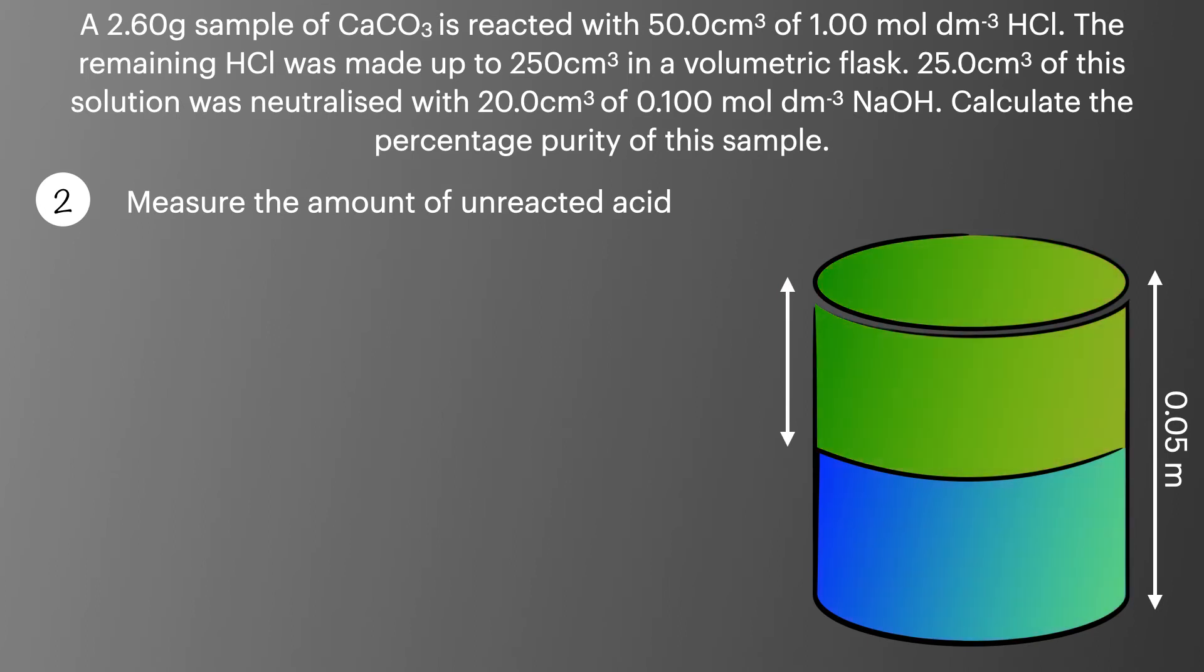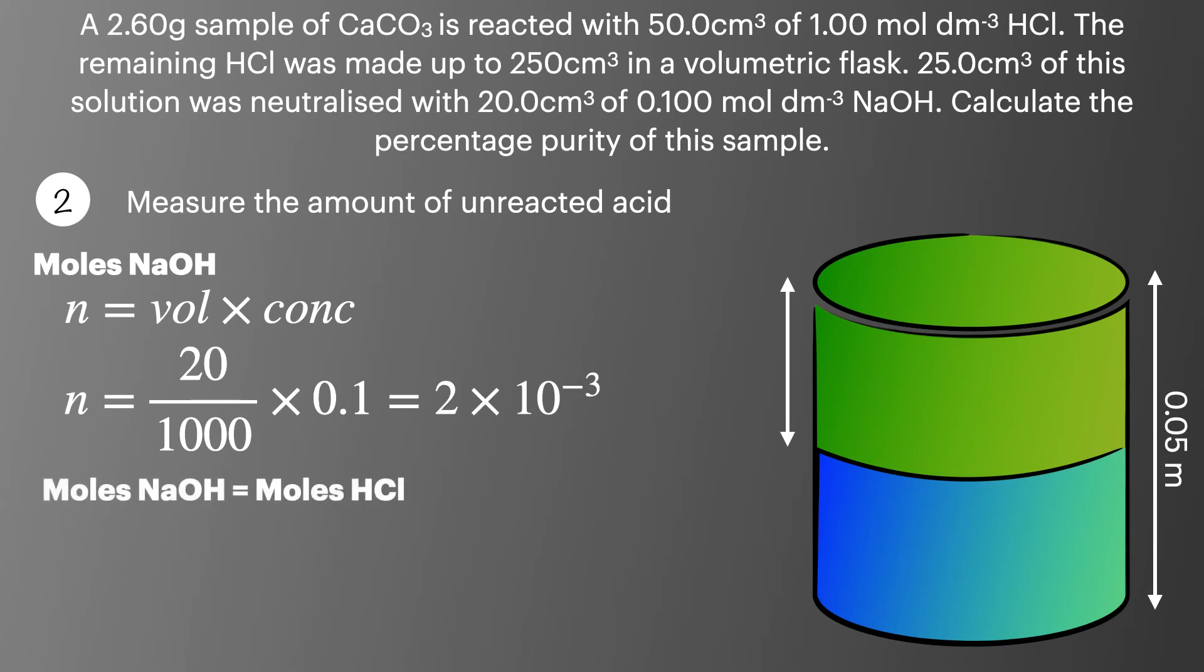In the second step we're going to measure the amount of unreacted acid. To do this we'll start by calculating the number of moles of sodium hydroxide using the titration. Number of moles equals volume times concentration and we've got 20 cm³ of 0.1 mol dm⁻³ sodium hydroxide which gives us 2 × 10⁻³ moles. We know the number of moles of sodium hydroxide will equal the moles of HCl so we've now measured the number of moles in our 25 cm³ sample.